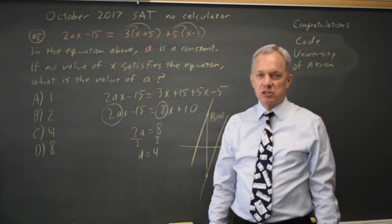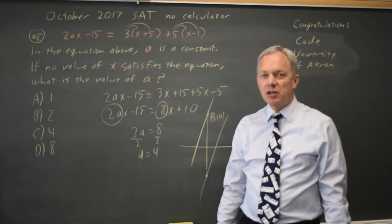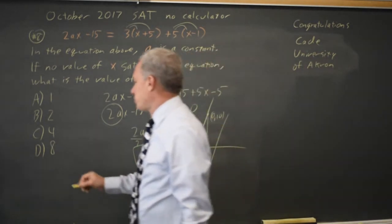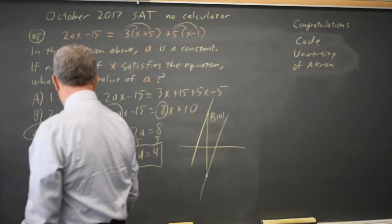The same slope will give you no solution if you have different intercepts. The same slope will give you infinitely many solutions if you have the same intercept. And College Board will ask both of them. Since I found a equals 4 for parallel lines, my answer choice is C.